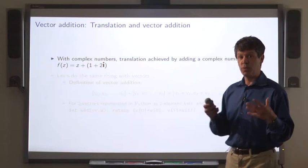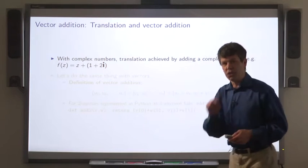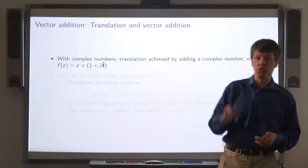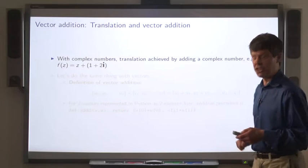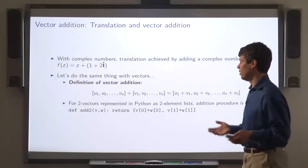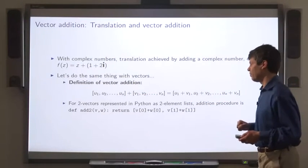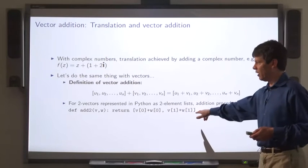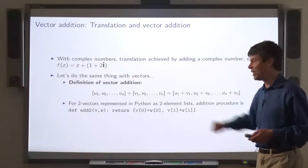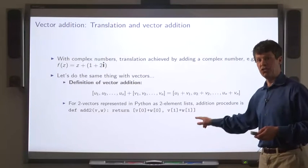Now, with complex numbers, we achieved a translation by addition. So in order to do the same thing with vectors, we have to introduce a vector addition operation. So here's the basic definition of vector addition. To add two vectors, you just add them entry-wise. Here's the code for doing addition of two vectors in Python when the two vectors are represented as lists.